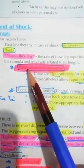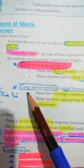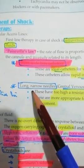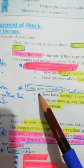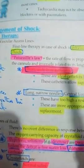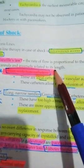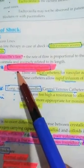This principle is explained by Poiseuille's law: the rate of flow is proportional to the fourth power of the radius of the catheter, and inversely proportional to its length. Therefore, if the radius is greater, the flow rate is higher. If the length is greater, the flow rate is lower. That is why short, wide-bore catheters are the ideal catheters in cases of shock.